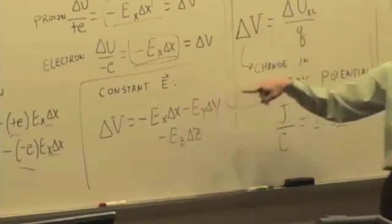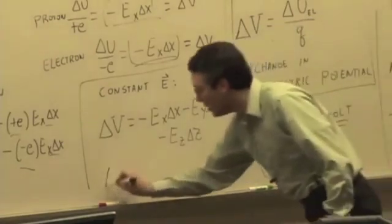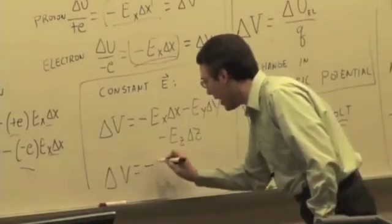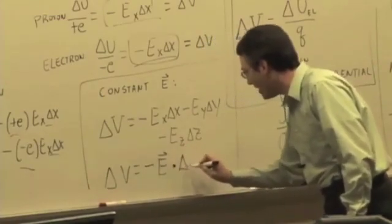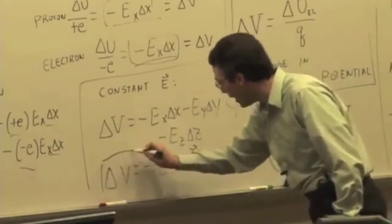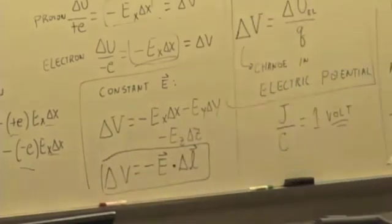But what is that? What kind of product is that? That's a dot product. So we can write delta V is equal to negative of the electric field vector dotted with what we'll call the delta L vector, some path length that has a displacement in the X, Y, and Z direction.